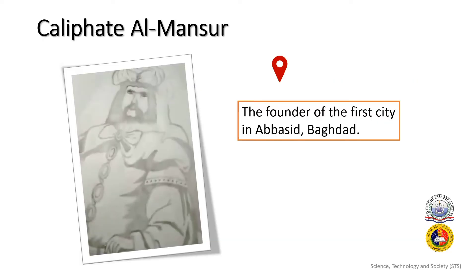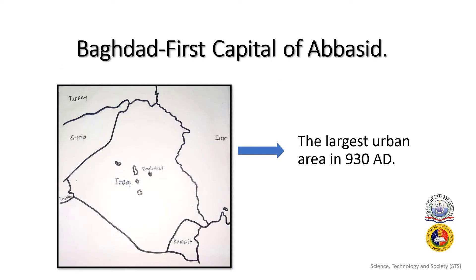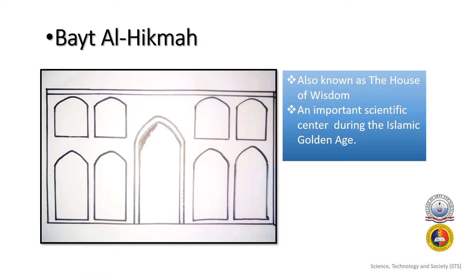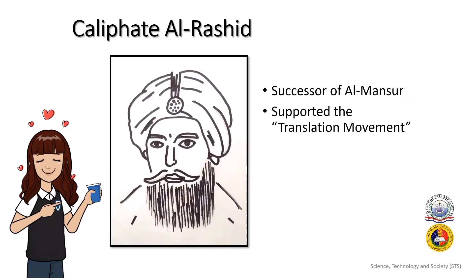Caliph Al-Mansur is the founder of the first capital of the Abbasid — Baghdad. Baghdad became the largest urban area in 930 AD. Caliph Al-Mansur is also a contributor to the famous House of Wisdom, Bayt al-Hikmah, which was an important scientific center during the Islamic Golden Age. Al-Rashid was the successor of Al-Mansur. He carried on the tradition and supported the translation movement, wherein scholars were sent all over the world to gather knowledge from Romans, Indians, and other countries, and translate it into Arabic.